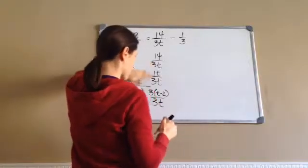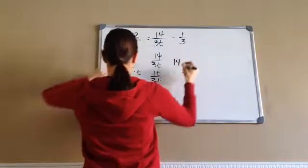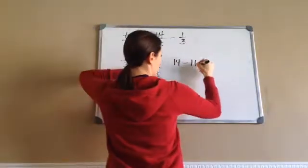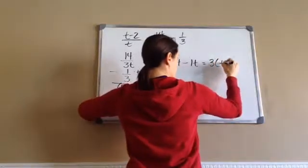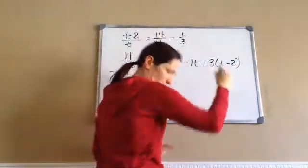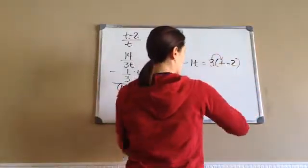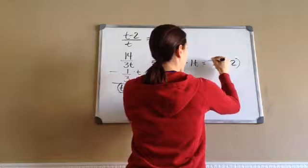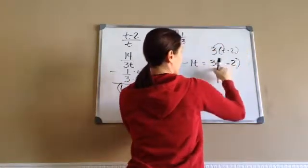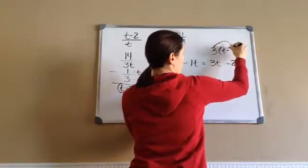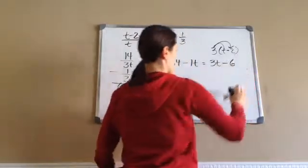Again, remember, you drop the 3T once you get to this place. So, we're just going to write the numerator. 14 minus 1T equals 3T minus 2. Now, I'm going to go in and answer this, so 3 times T is 3T minus 3 times 2 is 6.